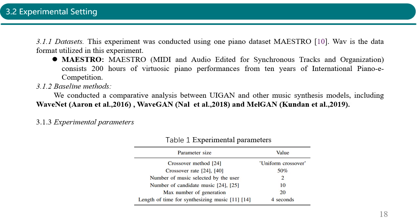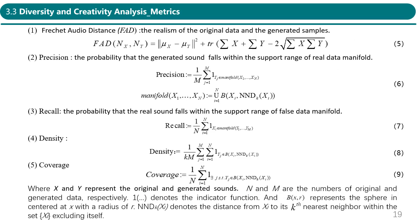Table 1 shows the experimental parameters of the proposed method. Five commonly used metrics for evaluating the diversity and creativity of generated samples are used in the experiment, including FAD, precision, recall, density, and coverage. These metrics are widely used to assess the creativity and diversity of image and audio generation models in recent years.